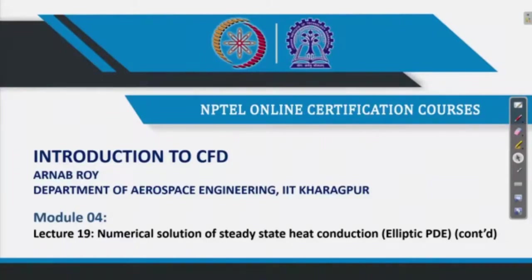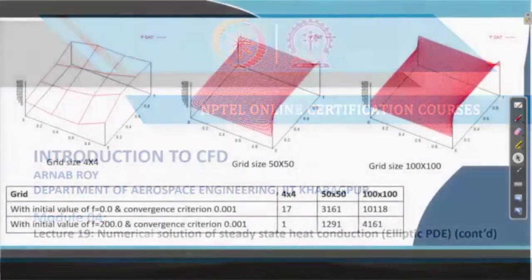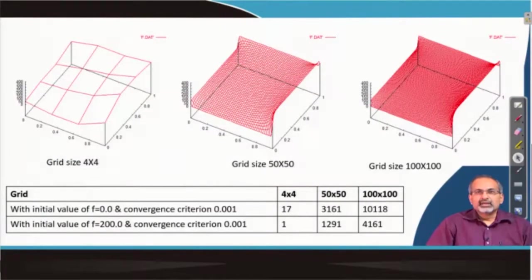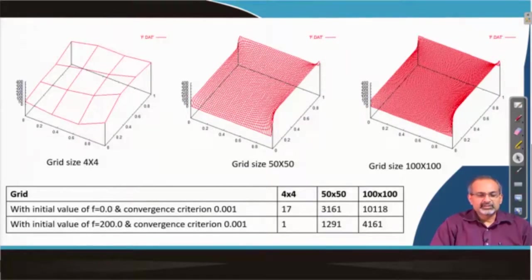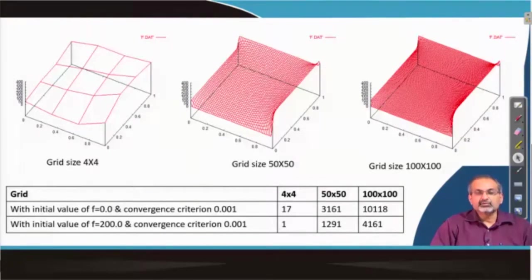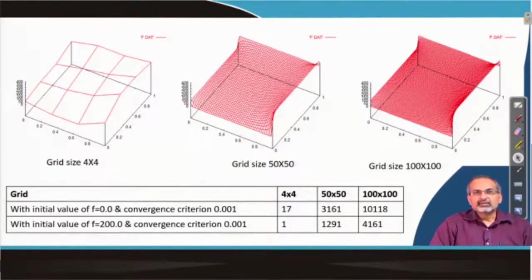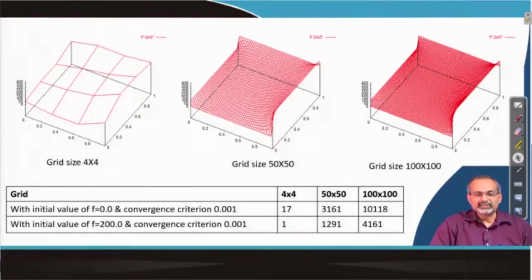In this lecture, we will continue our discussion on elliptic partial differential equations. In the previous lecture, we had tried to solve the problem of a square domain in which we had imposed 4 Dirichlet boundary conditions on the 4 sides of the domain, then taken a 4 by 4 mesh including the boundary grid points and tried to discretize the Laplace equation and solve it.